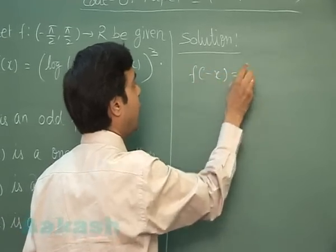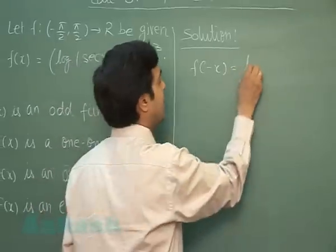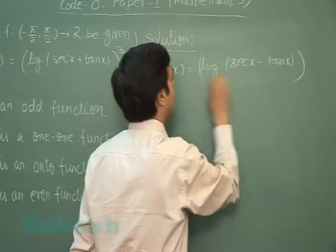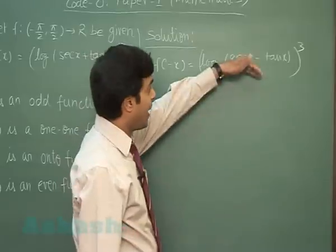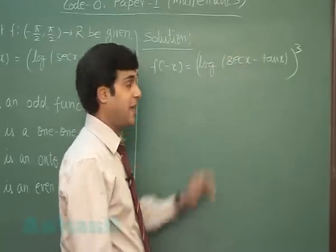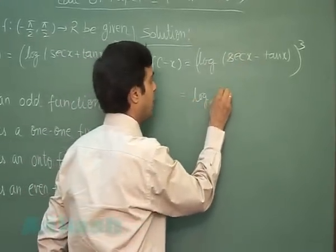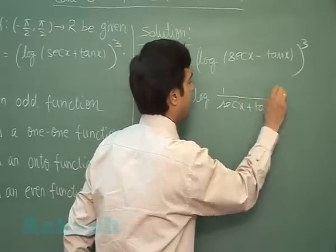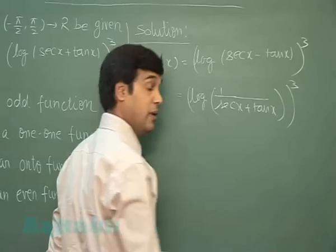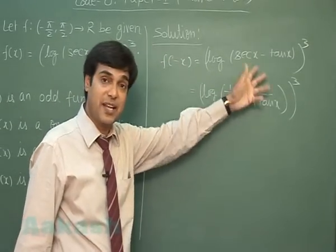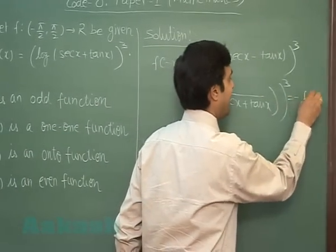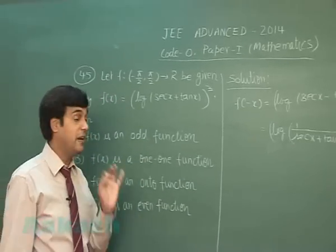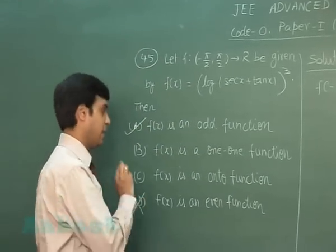So let's first find out f(-x), that is log(sec x - tan x)³. When I multiply divide this term by (sec x + tan x), it becomes log[1/(sec x + tan x)]³, means -log(sec x + tan x)³, or -f(x). So clearly the given function is an odd function. It is not even. Correct?